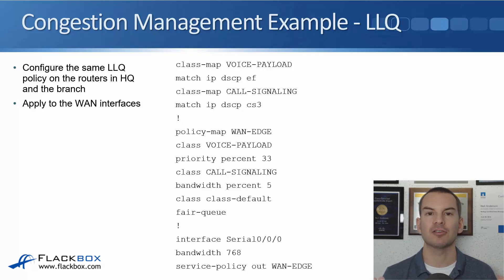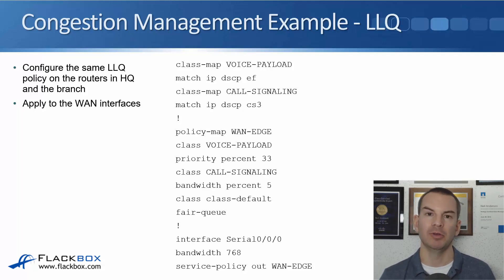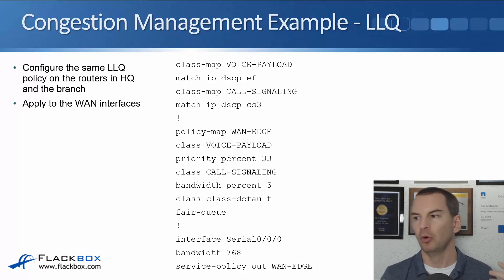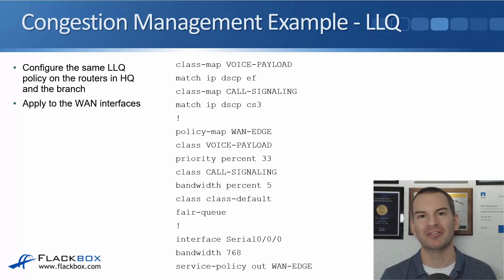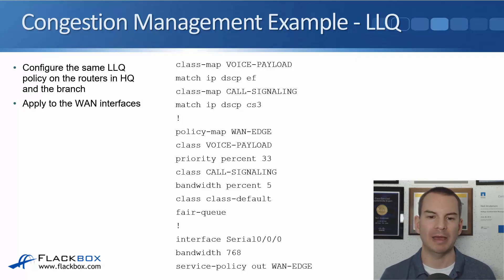Next is class class-default, which means all other traffic not specified higher up with a class map. For everything else, we say fair-queue. This is a best practice command — it's a more fair queuing policy than first-in, first-out. First-in, first-out tends to penalize small packets unfairly, so fair-queue is a better mechanism and best practice to include.